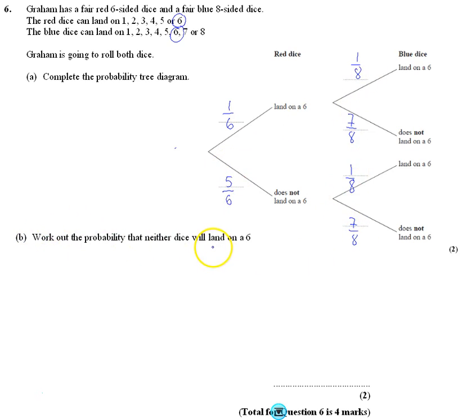The second part asks us to work out the probability that neither dice will land on a six. So that means starting with not landing on a six, followed by not landing on a six.